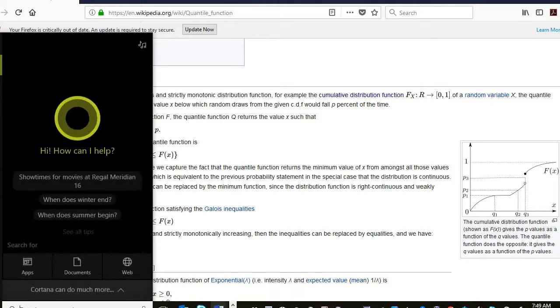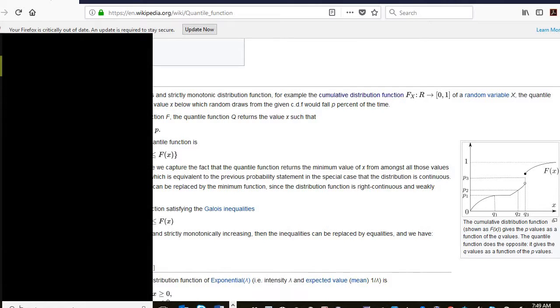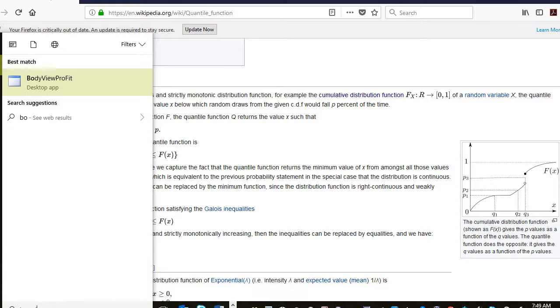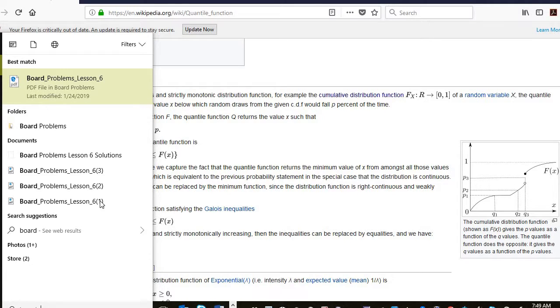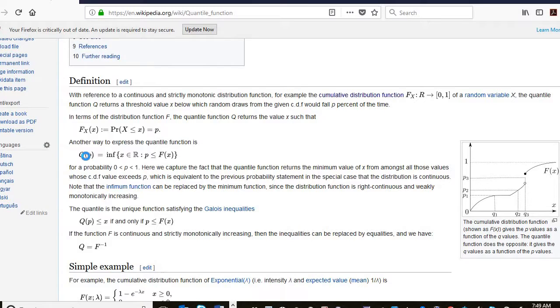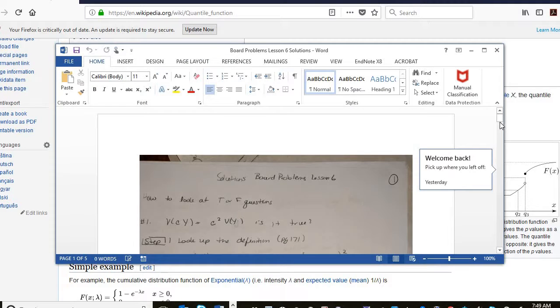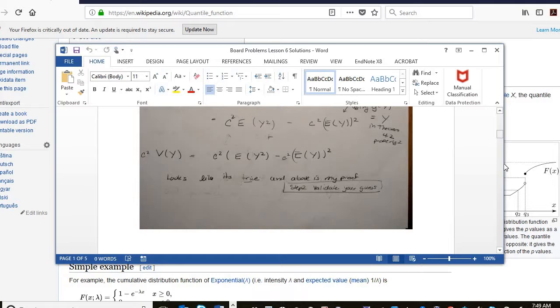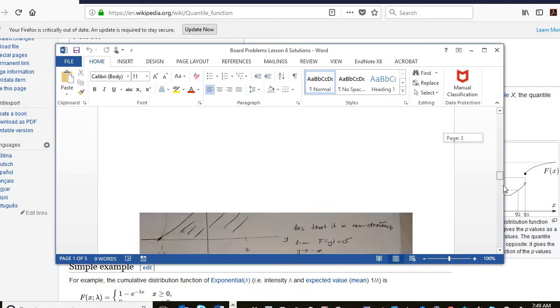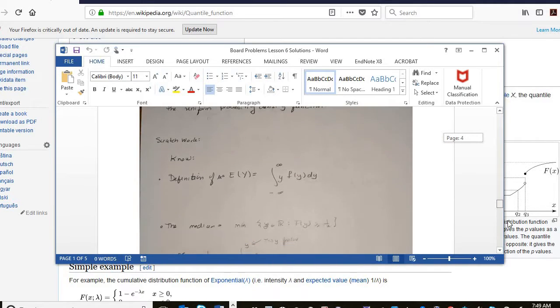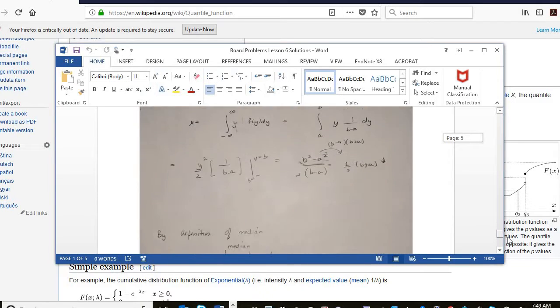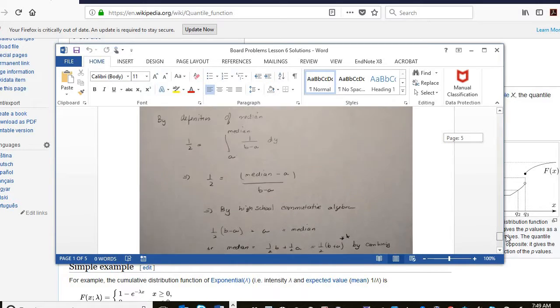So I think I had that in the notes yesterday. I think number eight is the one where we talked about it. We didn't write anything down, but that's where you just have to prove that they're disjoint sets in order for it to work.